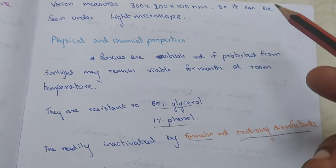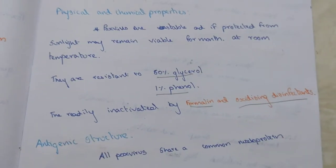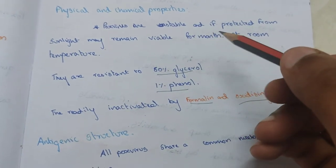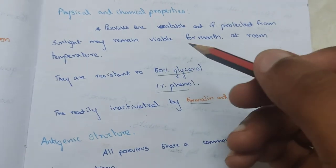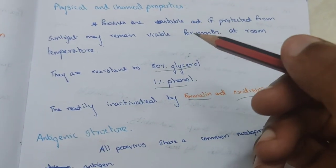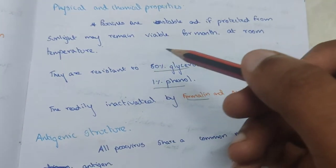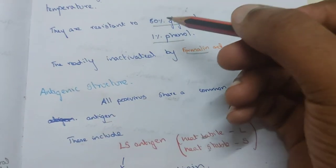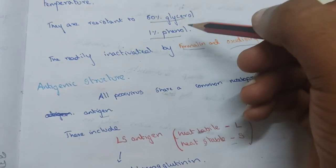The pox virus is large enough to be seen under a light microscope — there is no need for an electron microscope. Regarding physical and chemical properties, pox viruses are stable, protected from sunlight, and may remain viable for a month at room temperature. They are resistant to 50% glycerol and 1% phenol.